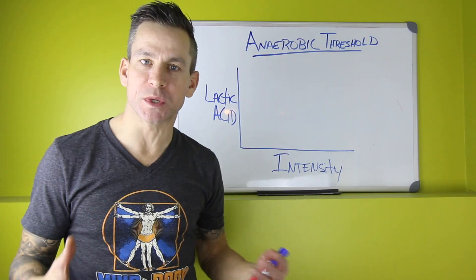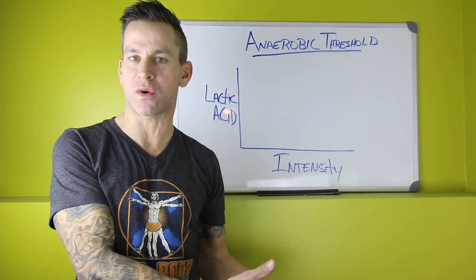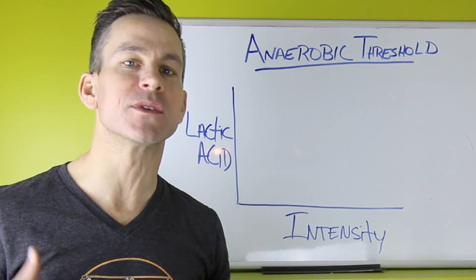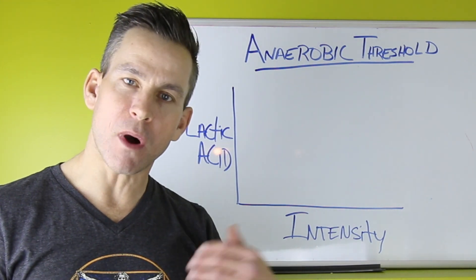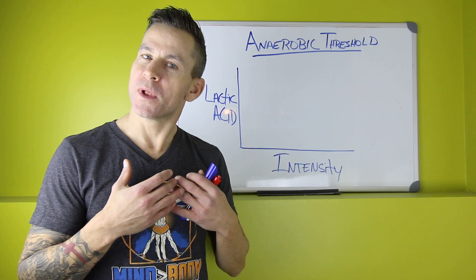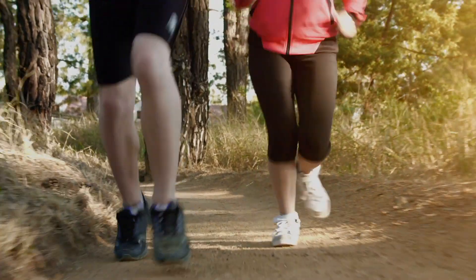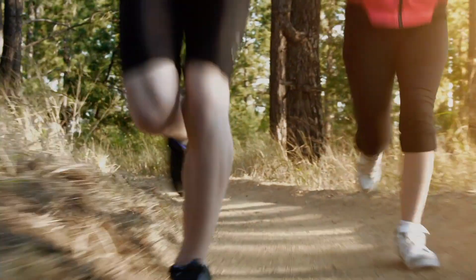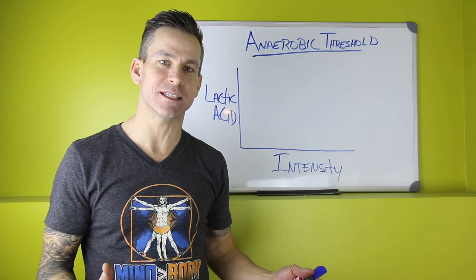I want to explain to you what's going on in the body and how we train to improve your threshold. As we exercise and start to exert ourselves, our body produces a byproduct called lactic acid. In lower intensity workouts, when we're running at a controlled easy pace, there's plenty of oxygen in our body. The oxygen helps to clear out that lactic acid.